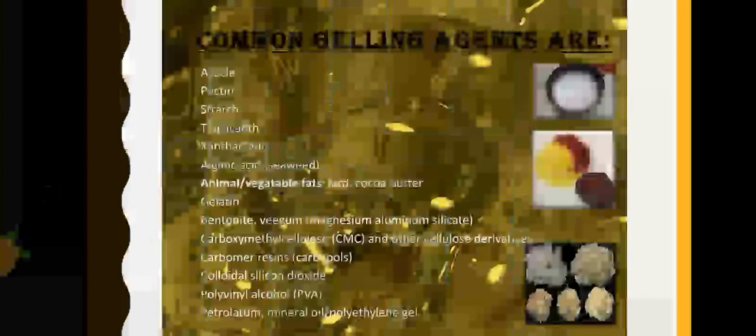Some common gelling agents that are used are acacia, pectin, starch, tragacanth, xanthan gum, alginic acid, and in animal or vegetable fats we have lard, cocoa butter, gelatin, bentonite, veegum, carboxymethyl cellulose, polyvinyl alcohol, petrolatum, mineral oil, and polyethylene gel. As you can see, all of these are the common gelling agents.